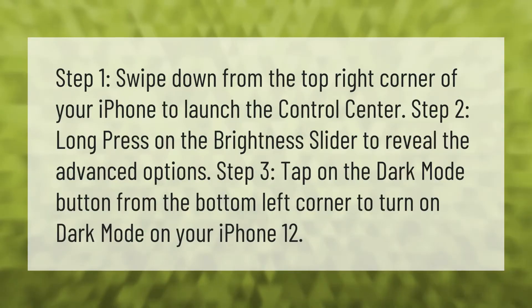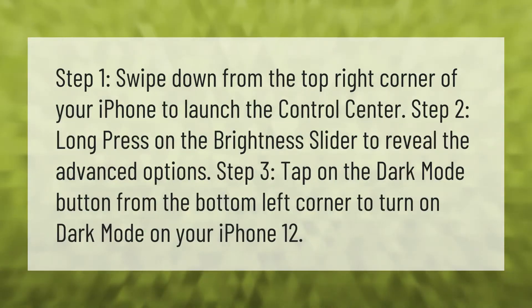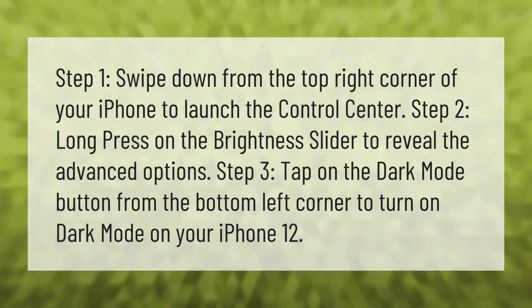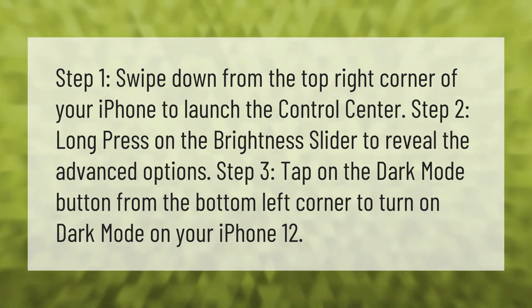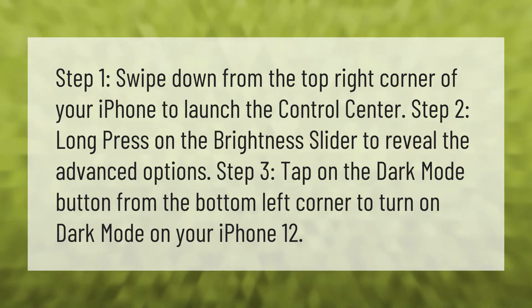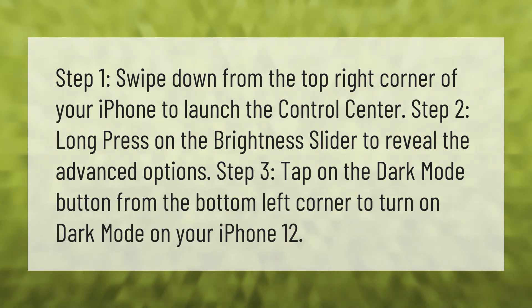Step one: swipe down from the top right corner of your iPhone to launch the Control Center. Step two: long press on the brightness slider to reveal the advanced options. Step three: tap on the dark mode button from the bottom left corner to turn on dark mode on your iPhone 12.